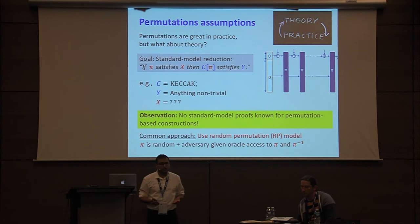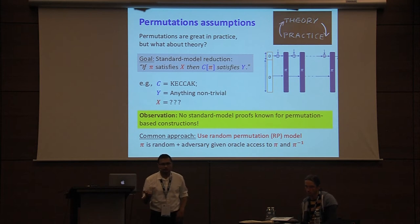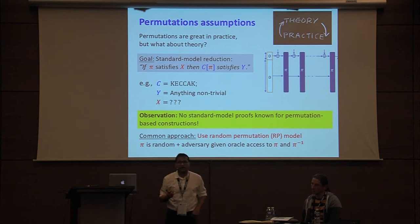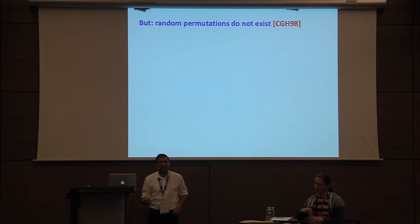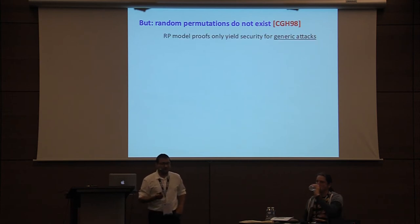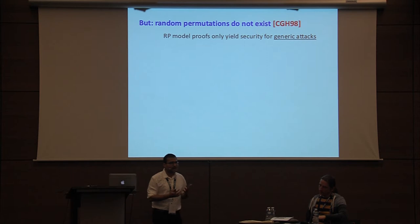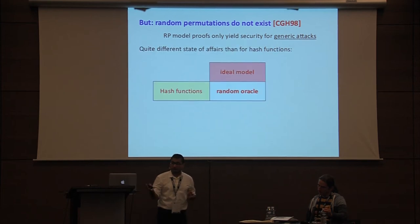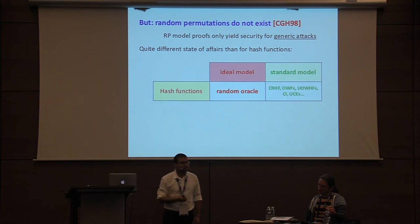Sadly, there are no known standard model proofs for permutation-based constructions. The only known approach is to use the random permutation model, where pi is modeled as a random permutation and the adversary is given only oracle access to both pi and pi-inverse. However, random permutations are ideal objects and they cannot even be instantiated. Moreover, random permutation model proofs only give security against generic attacks, where we hope the adversary is not going to exploit implementation-specific vulnerabilities.